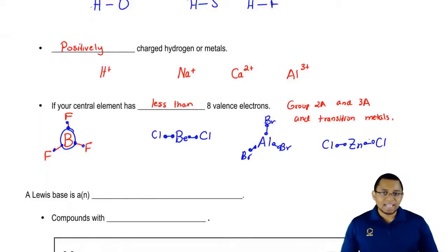So this last type of Lewis acid is common with Groups 2A, 3A, and the transition metals. When they're in the center, they tend to have less than 8 electrons, and as a result, they serve as Lewis acids. They're going to accept an electron pair.